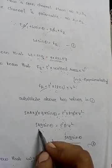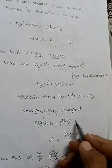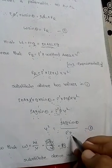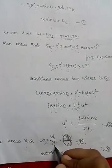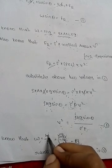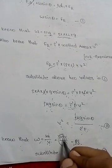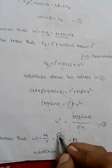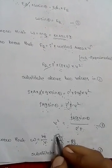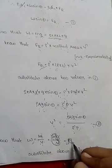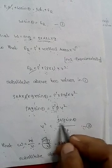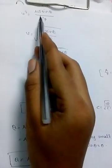We will cancel the length. So rho·g·sinθ equals f'·p·v². Solving for velocity: v² equals rho·g·sinθ divided by f'·p. Now, weight W equals m·g, and density rho equals mass divided by volume. Substituting, we get v² equals rho·g·A·sinθ divided by f'·p.